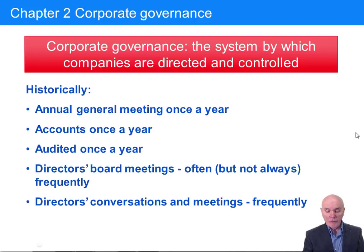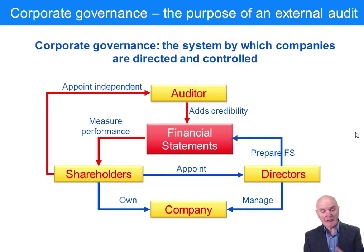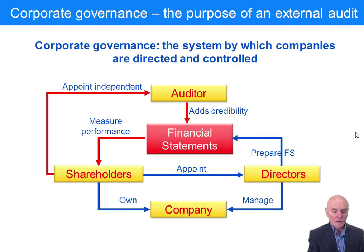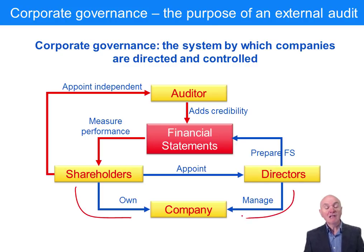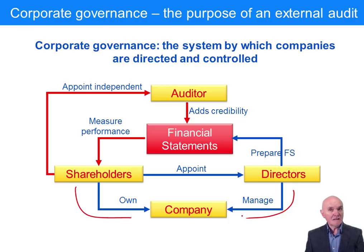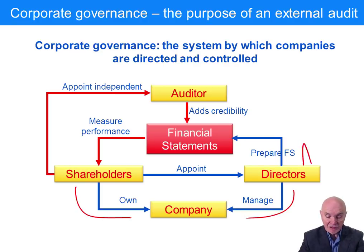This was particularly true if you had a dominant chief executive who would steamroller over what the board would be capable of doing if they met as a whole. This is a kind of diagram of how it worked: shareholders own the company and the company should be run for their benefit. The shareholders appoint directors, but the directors manage the company on a day-to-day basis.